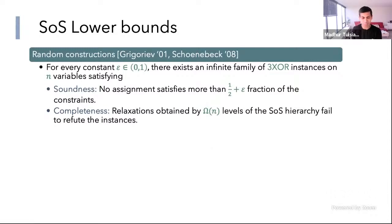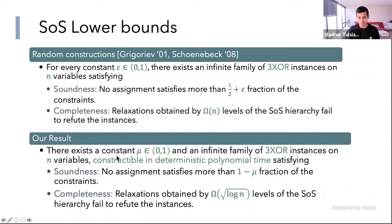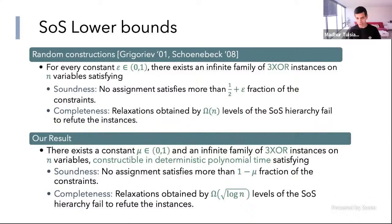On the other hand, the SOS hierarchy thinks a random 3XOR instance is completely satisfiable and fails to even refute it. In our work, we give an instance constructible in deterministic polynomial time, but it is weaker in certain senses. If you think of mu as 0.1, we show there are instances where no assignment satisfies more than 90% of the constraints, and SOS still fails to refute it. But for random instances, this can be proved even for a linear number of SOS levels, whereas here we can only prove it for square root log n levels.